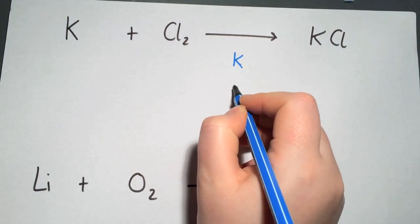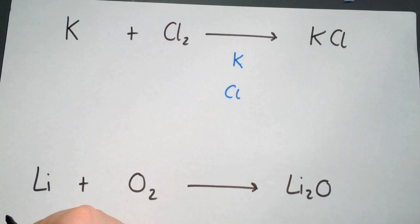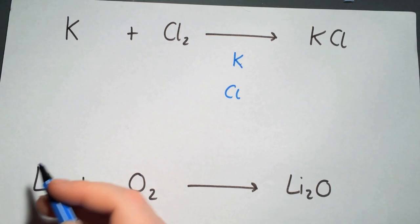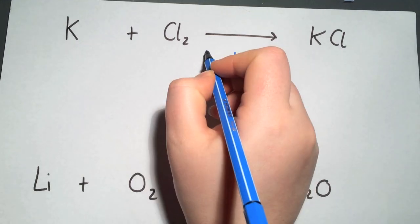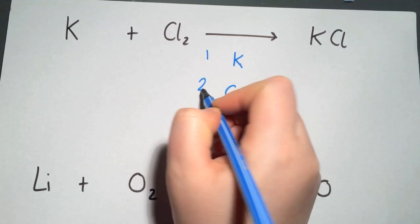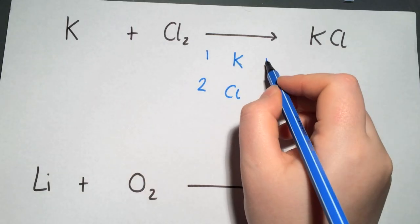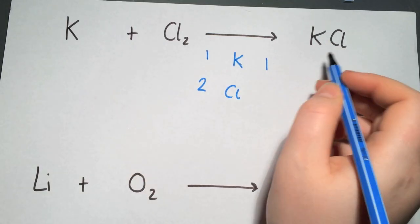In our first equation we have potassium and we have chlorine, and you simply write down the symbols underneath the arrow. On the left hand side you write down how many you have on the reactants — so we have one and two — and on the right hand side you write down how many we have for the products: one and one.